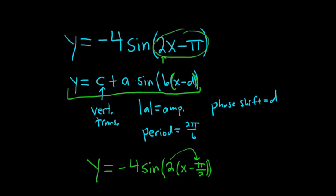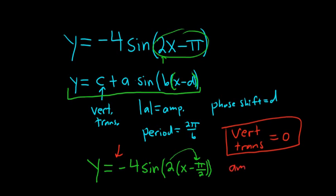All right, so now from this we can write all of the answers down. Let's see. So I guess first the vertical translation. That's going to be 0, right? Because c is 0. It's not here. It's nonexistent. Okay, so the vertical translation is 0. All right, how about the amplitude? Well, that's the absolute value of negative 4. So the amplitude is just 4, because the absolute value of negative 4 is 4.